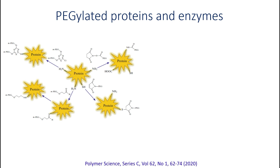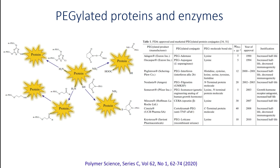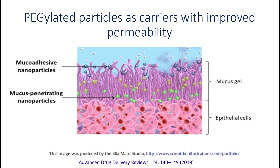PEGylation of proteins is a clinically proven approach to increase the elimination half-life and decrease the immunogenicity of protein therapies. This approach helps to increase the molecular weight of proteins, masks their surface, and improves pharmacodynamics and pharmacokinetics. There are currently a number of marketed PEGylated proteins approved by the Food and Drug Administration.